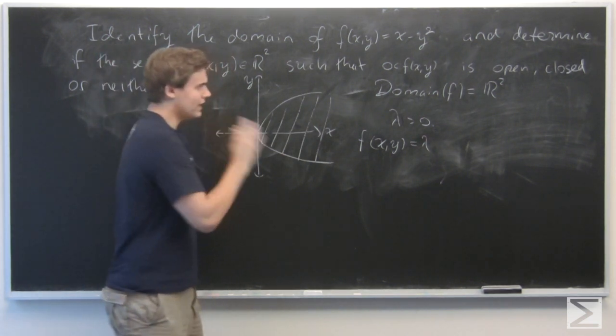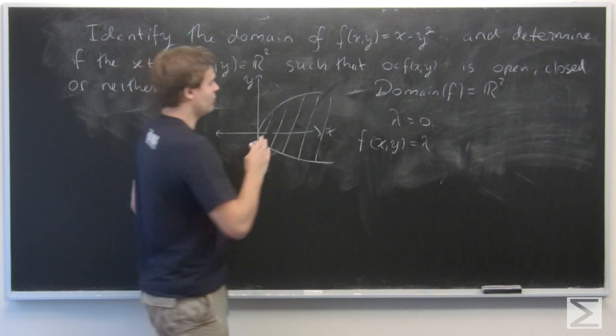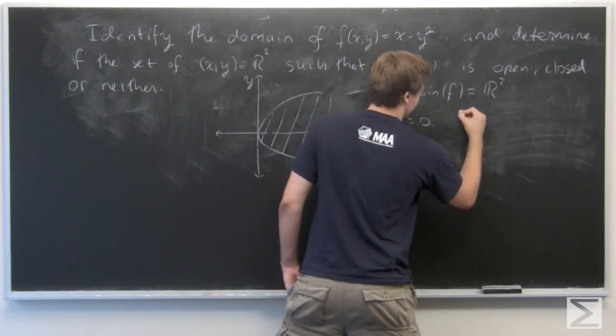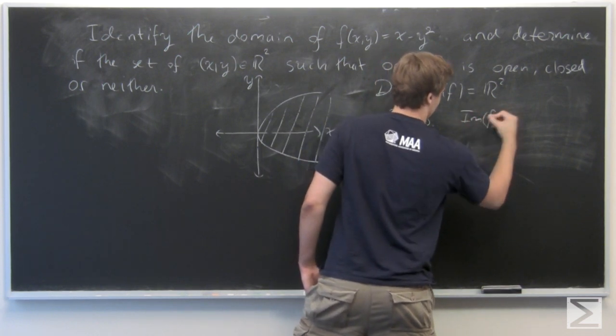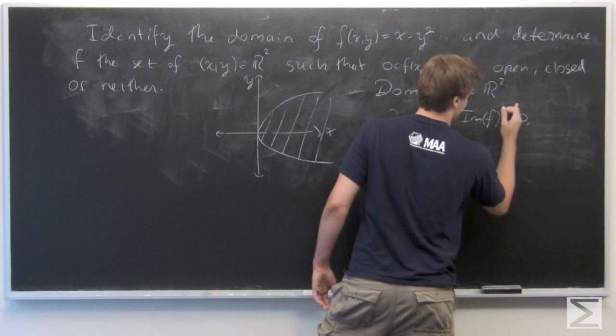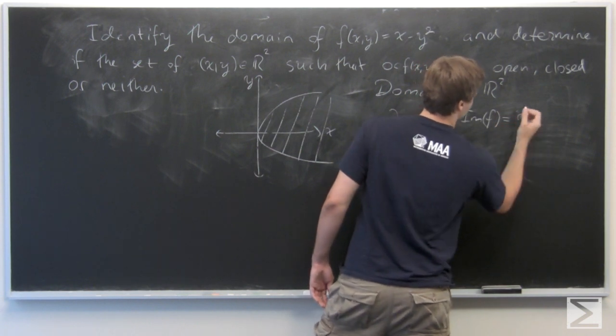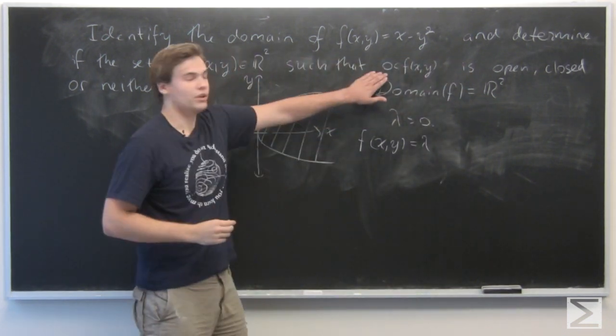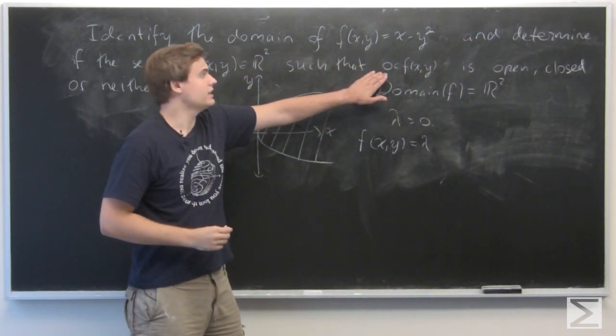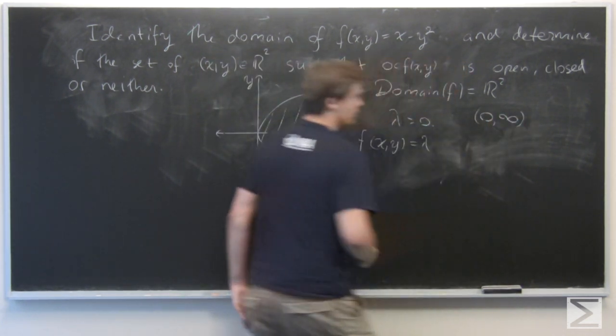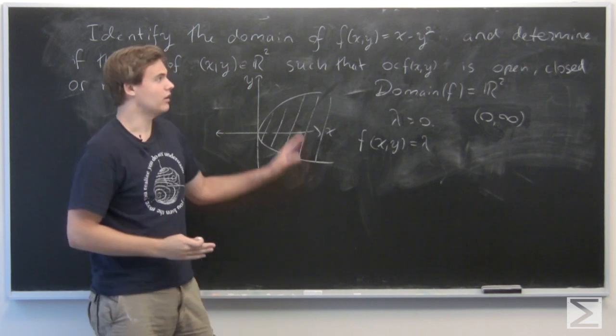So that shows that we have the entire open to the right. The set of points here satisfying this equation is actually the set from 0 to infinity. Which is open in R.